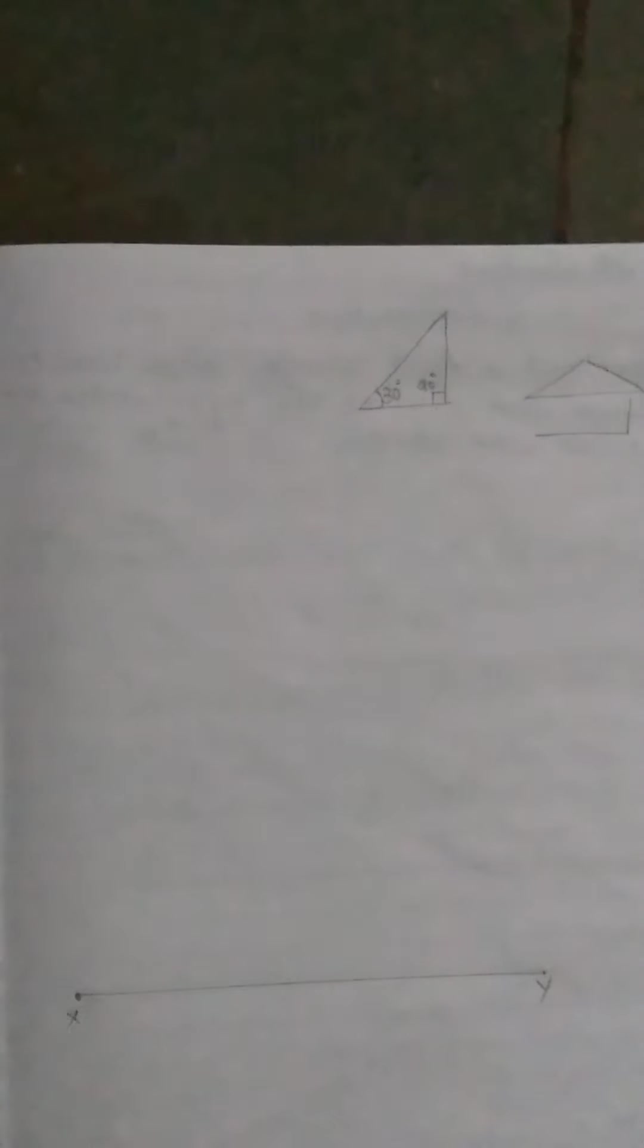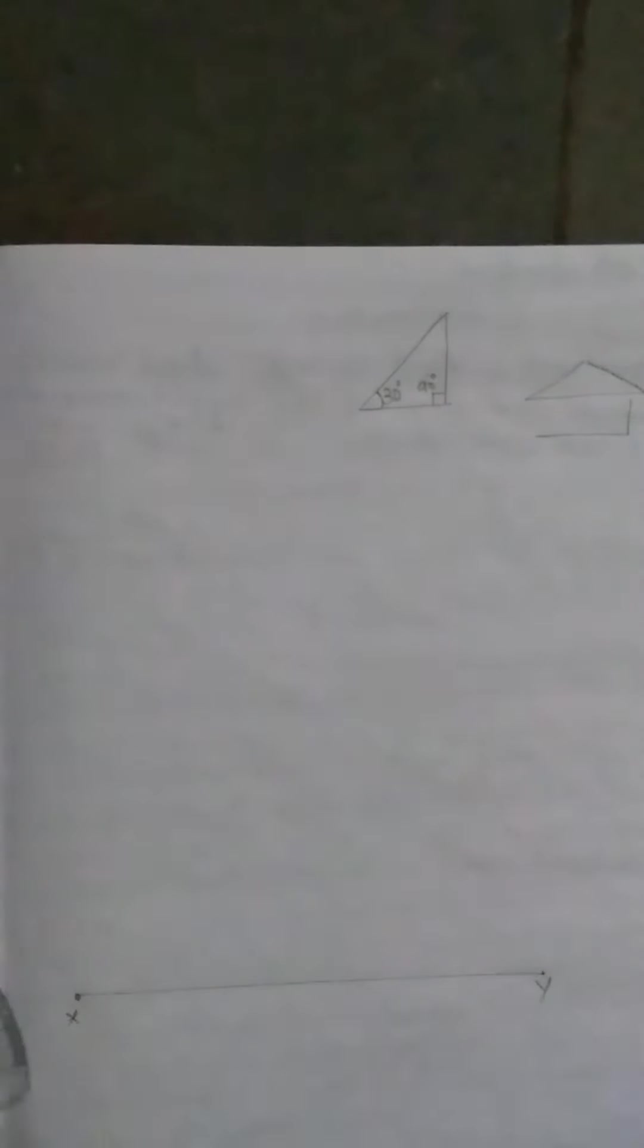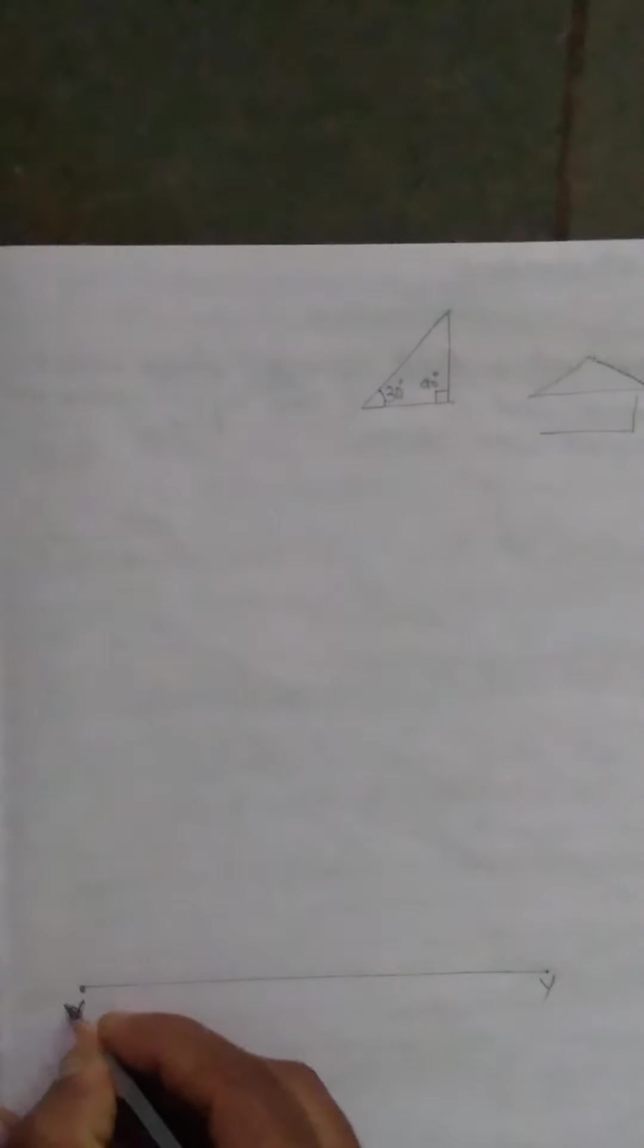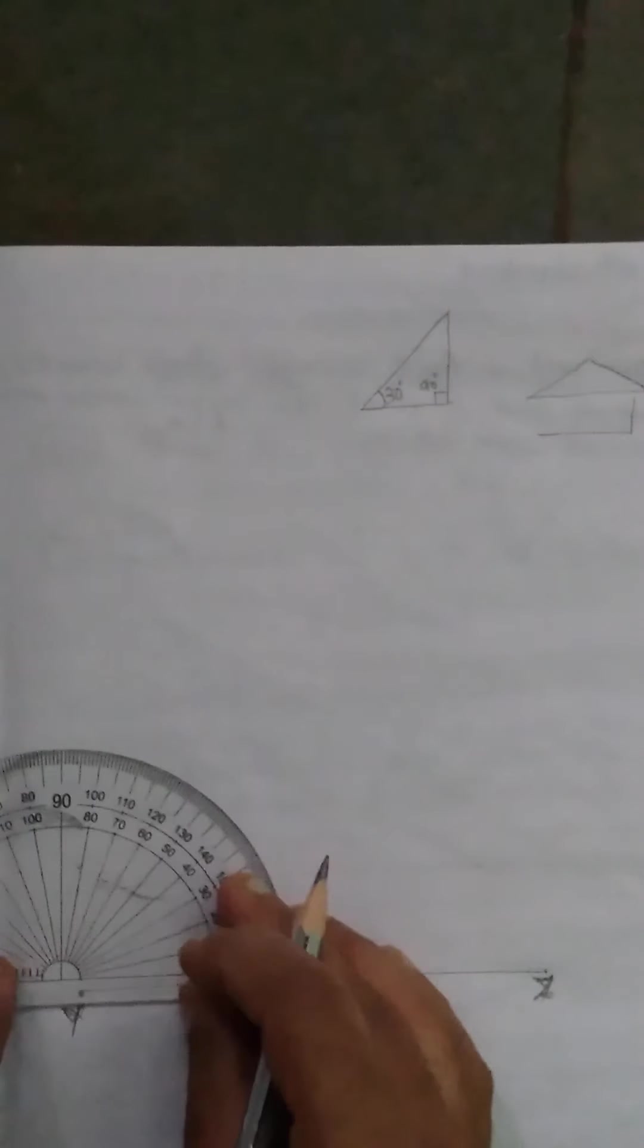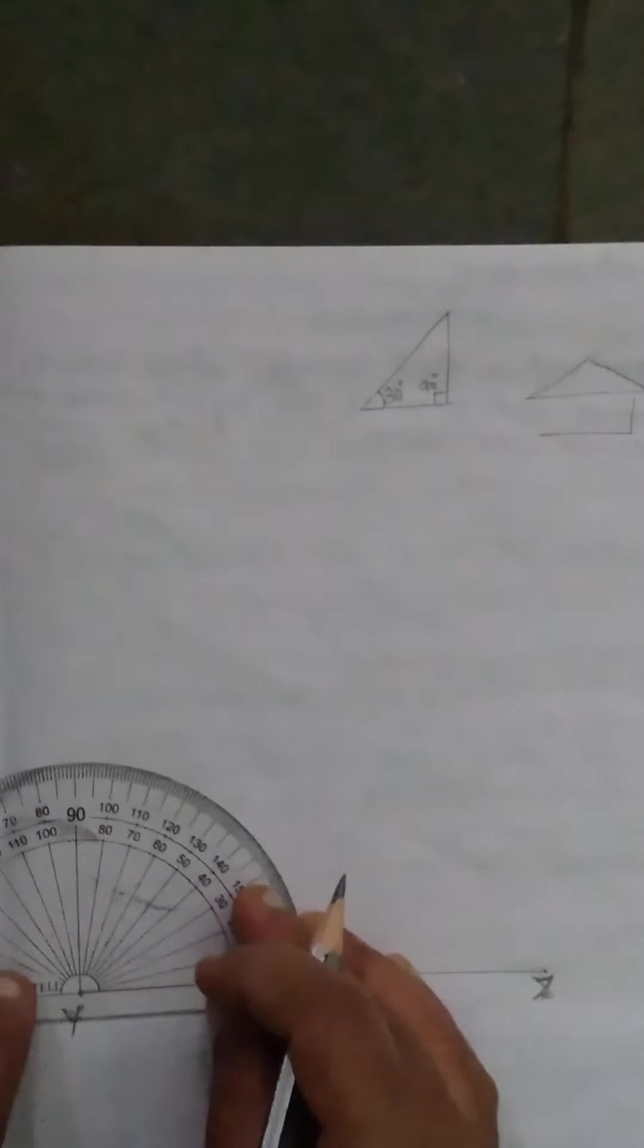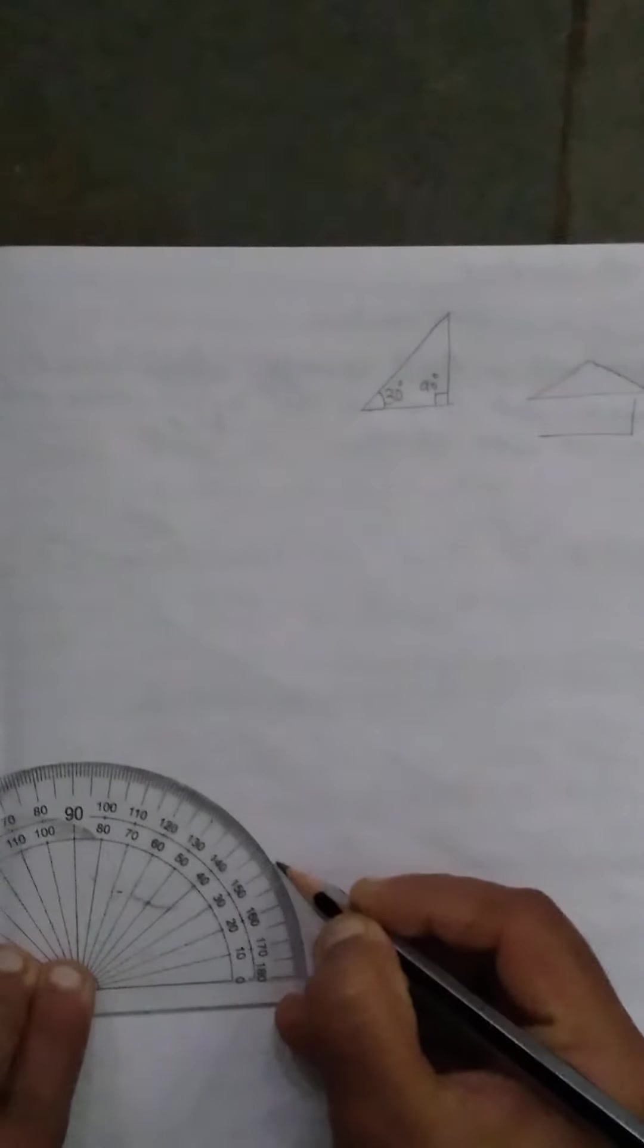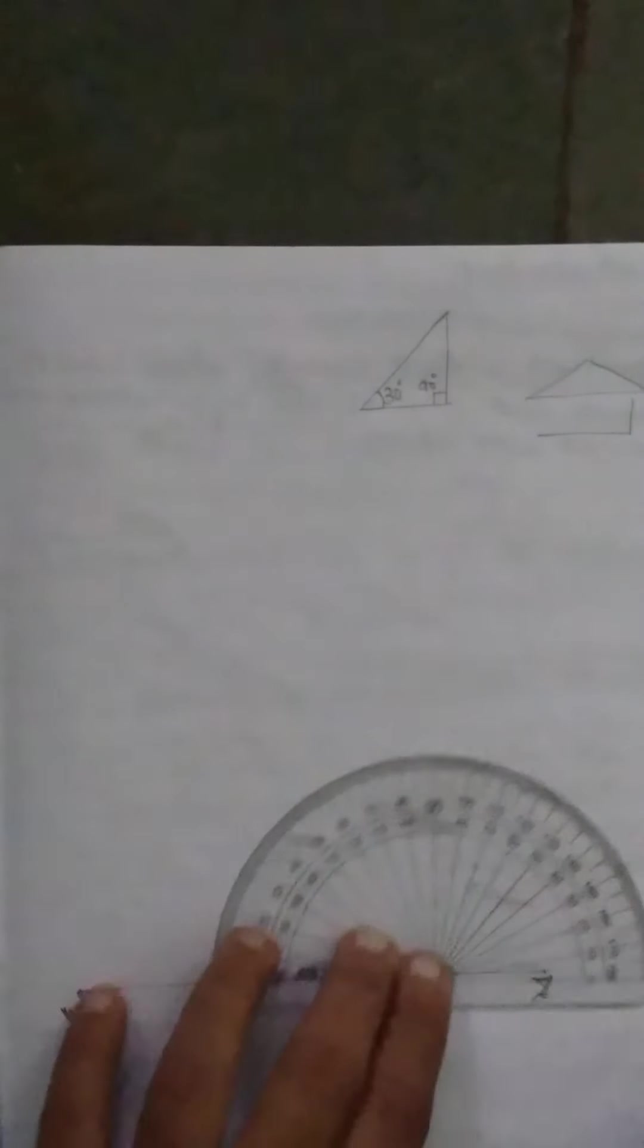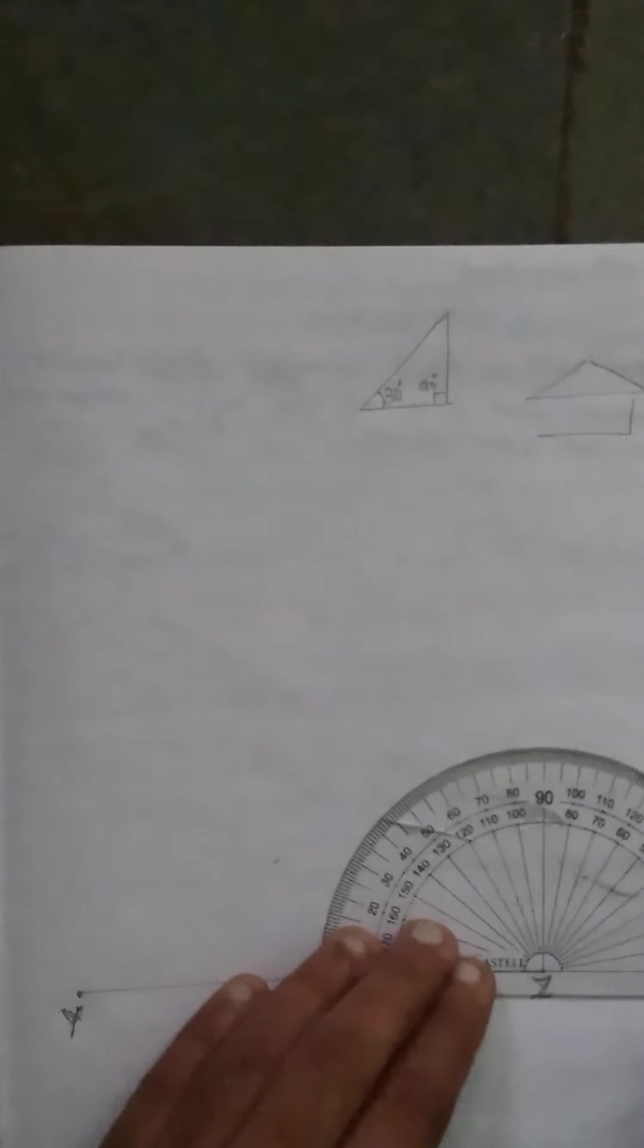And they given an angle. Mention these vertices as Y and Z. They given two angles. First they given angle Y as 30 degree and angle Z as 90 degree exactly.